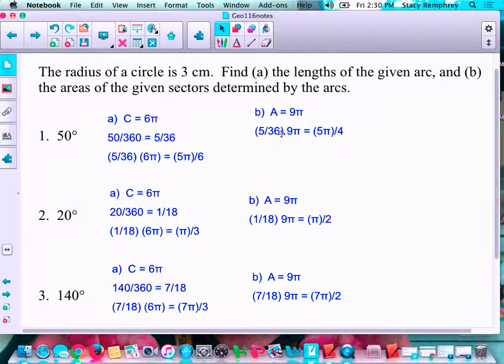And for the area, the area of the whole circle is 9π. Again, I don't want the whole circle. I want this fraction of the circle. And again, if you're looking at the calculations, 5 over 36 multiplied by 9π over 1. If you simplify that, 5π over 4.